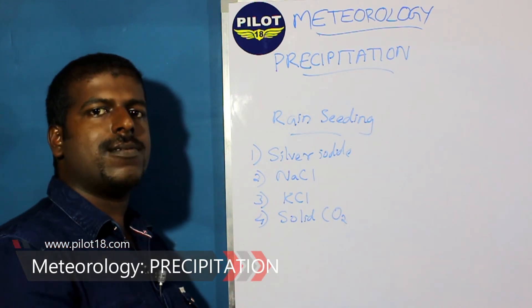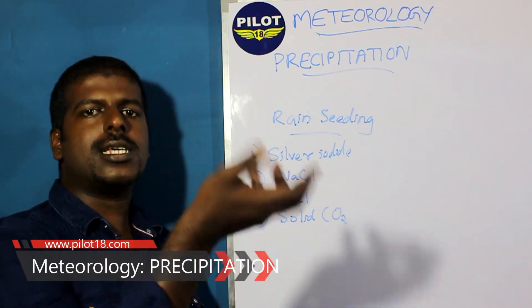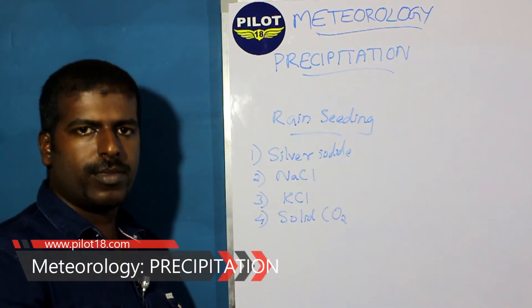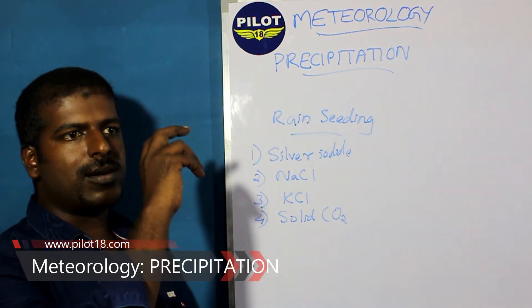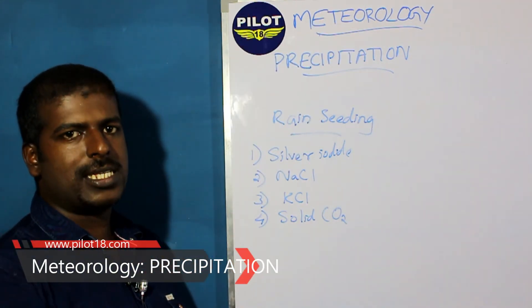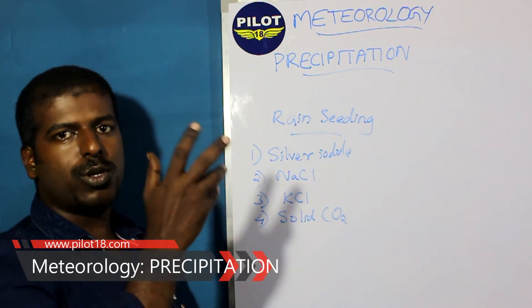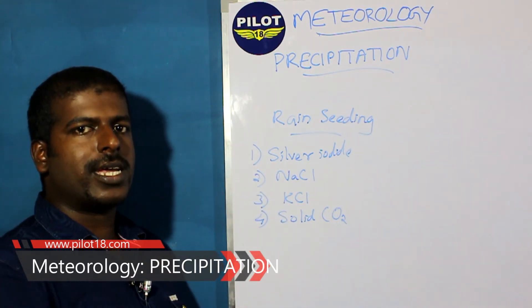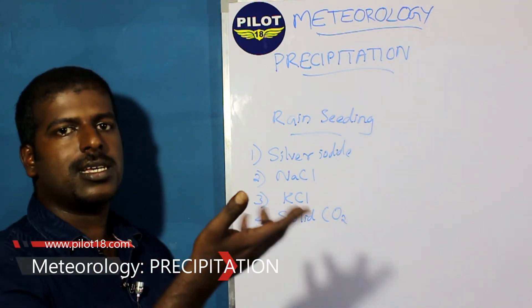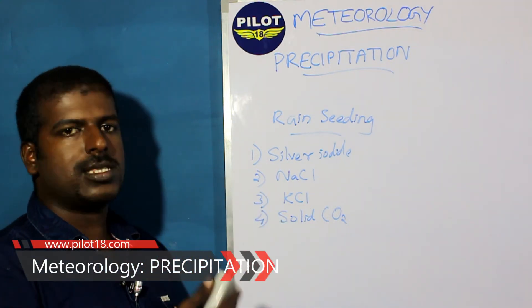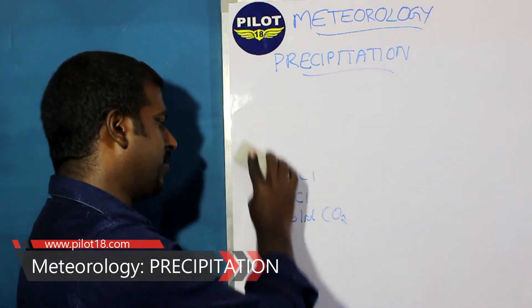However, there is a negative side to rain seeding. By inducing rain from a particular cloud, we are depriving the rain that may have fallen in some other region at a later point in time. It is not a recommended practice, but when the need arises we have to do something like this. That is artificial rain seeding.